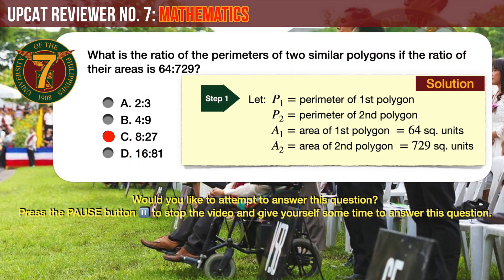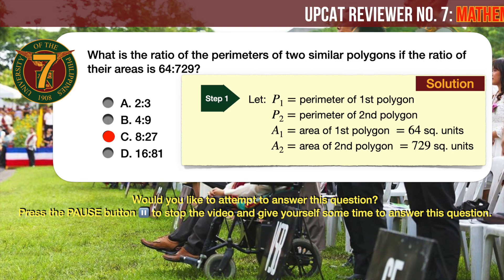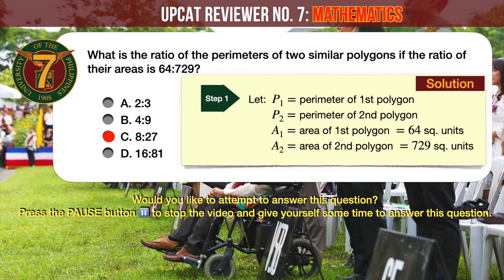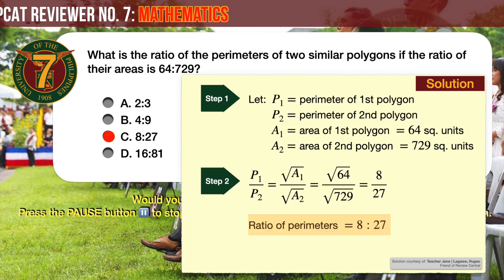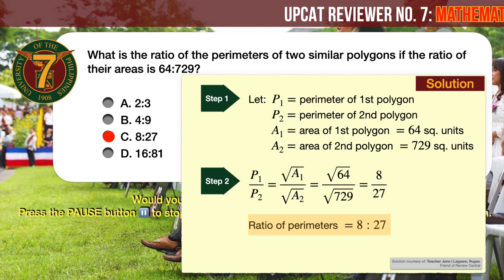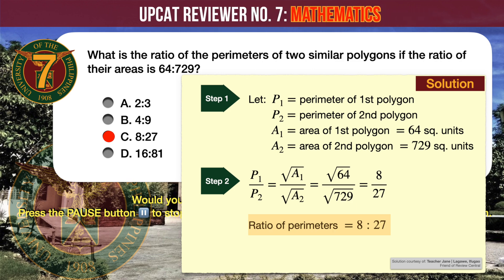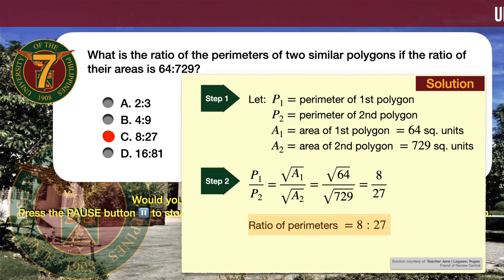Going back to our given problem: let P1 and P2 be the perimeters and A1 and A2 be the areas of the two polygons. Since the scale factor for area is the square of the scale factor for length, and the areas are already given, we take the square roots of the area ratio to get the ratio of the perimeters. The square root of 64 is 8 and the square root of 729 is 27, so the ratio of the perimeters is 8 to 27.